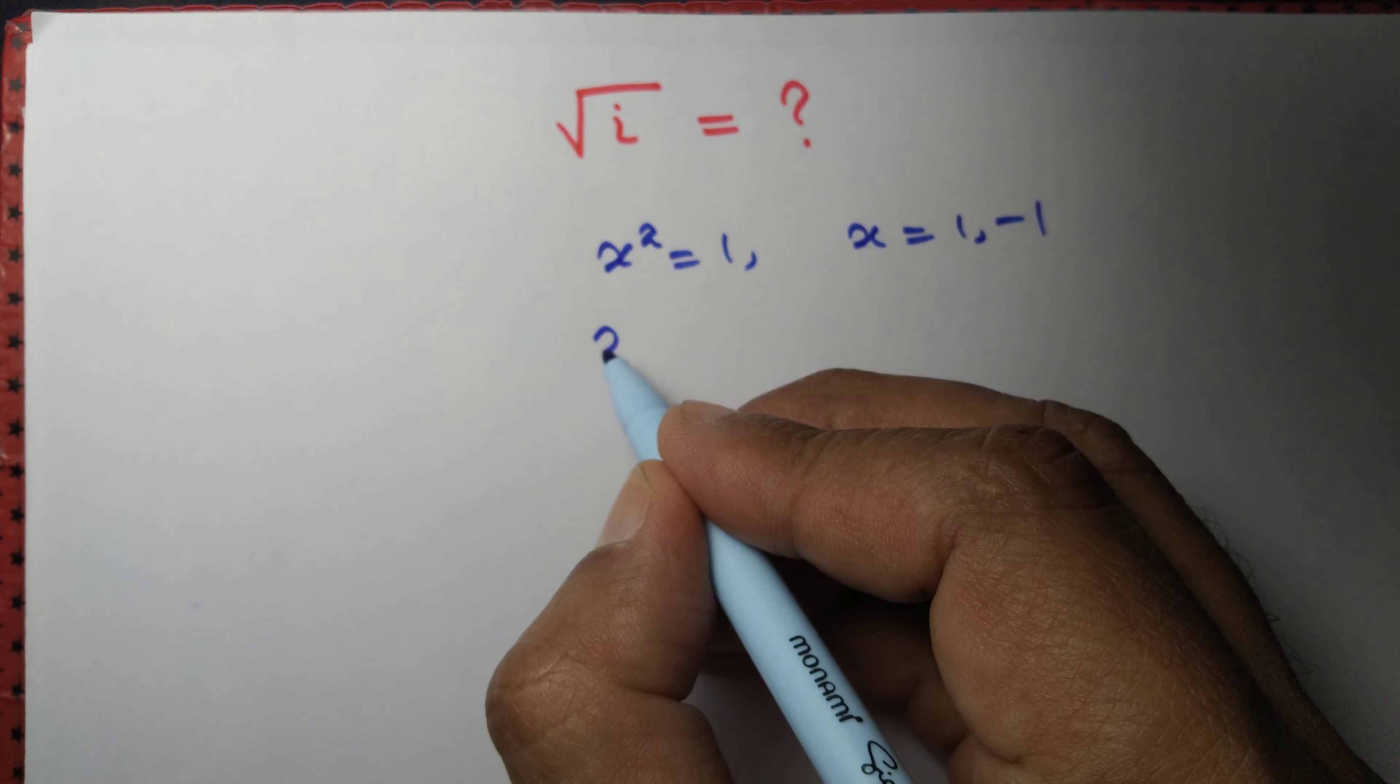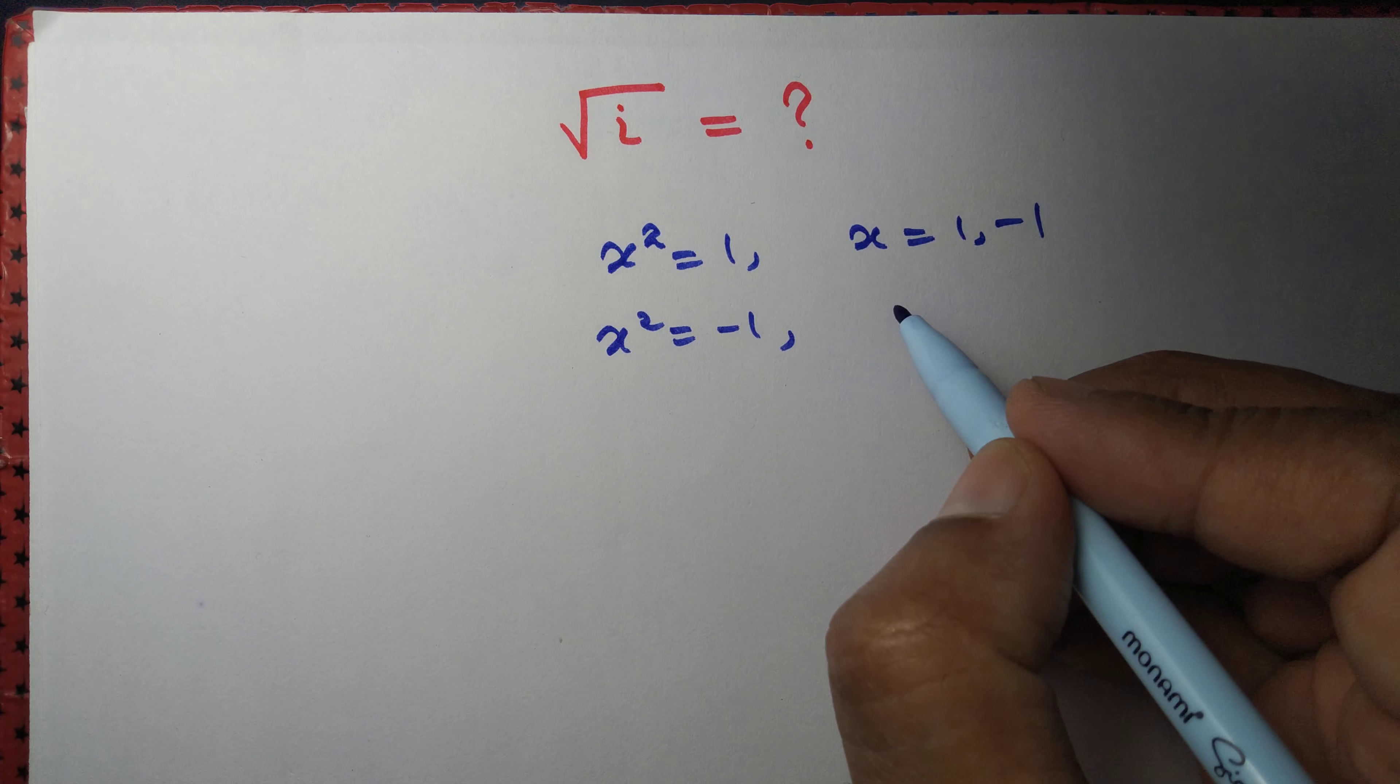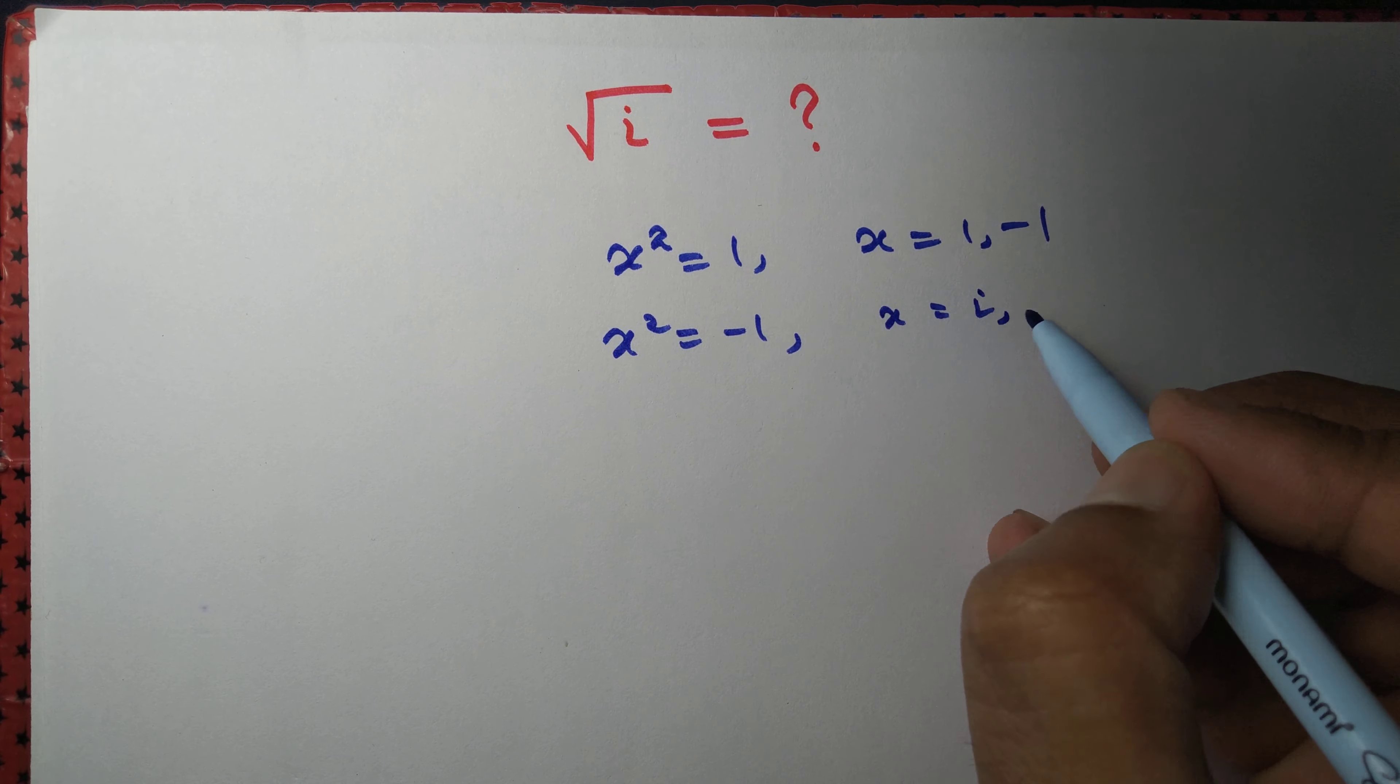If you solve the equation x squared equals minus 1, then you get the solution x equals i, minus i.